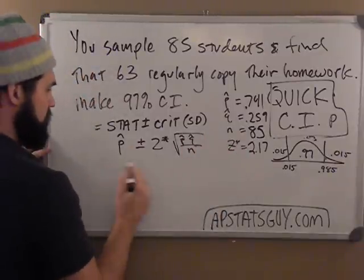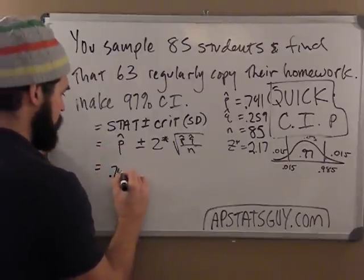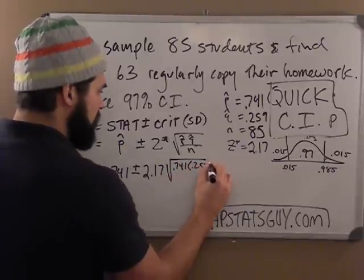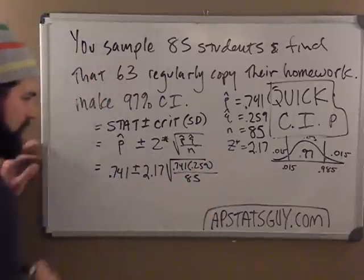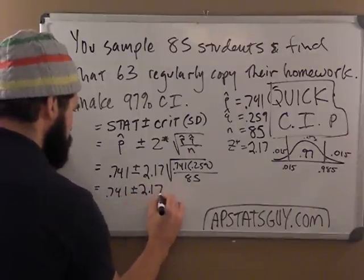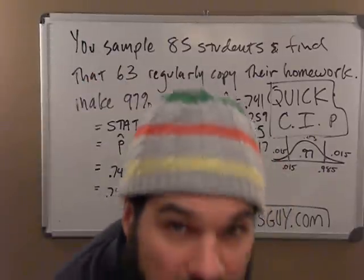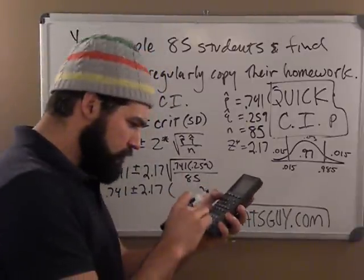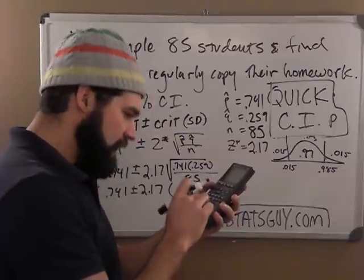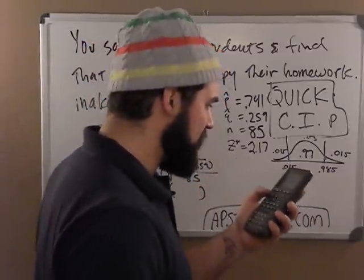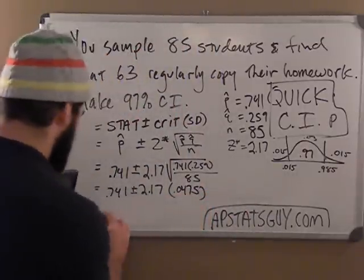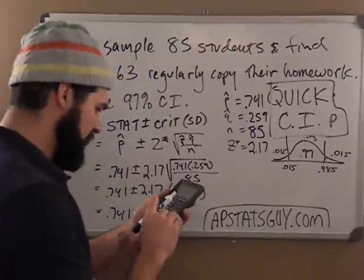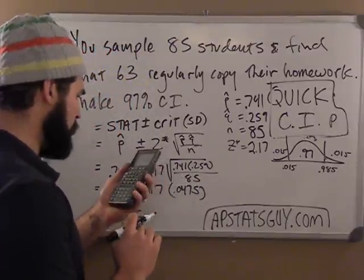So here I go, I just plug everything in. My P hat, I stand at it, and I get .741 plus or minus 2.17 times the square root of .741, .259, all over 85, which is .741 plus or minus 2.17 times some standard deviation, which I will do in one line in my calculator, second square root, and inside the parentheses, .741 times .259, divided by 85, .0475. So I'm going to go .741 up and down about two standard deviations, and the standard deviation is .0475, so I multiply this by 2.17, and I get .103.